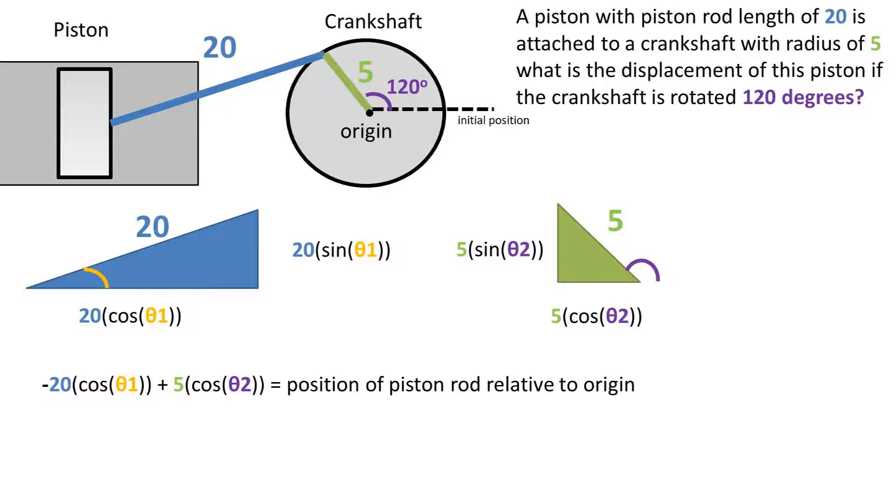We are left with negative 20 cosine of angle 1. This is negative because this section will always go leftward, or towards the negative side. Plus 5 times the cosine of angle 2. This will change from positive to negative depending on the crankshaft rotation from initial position.